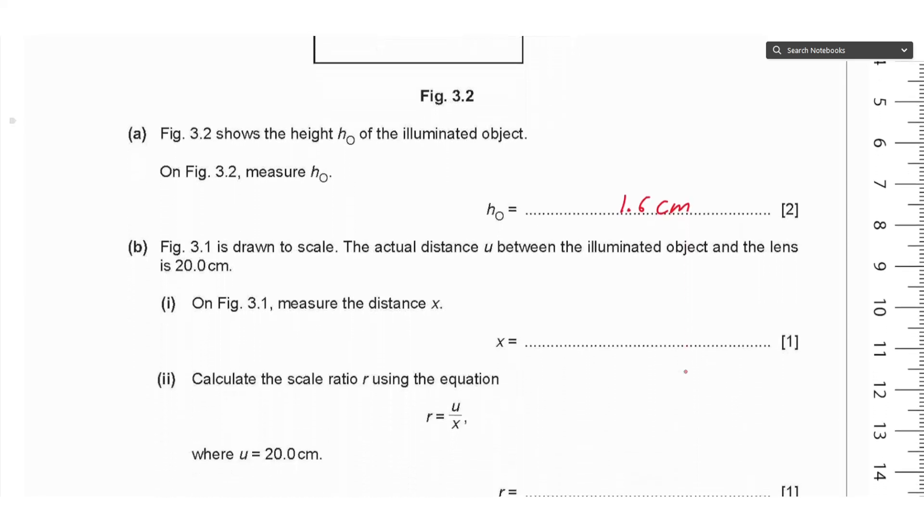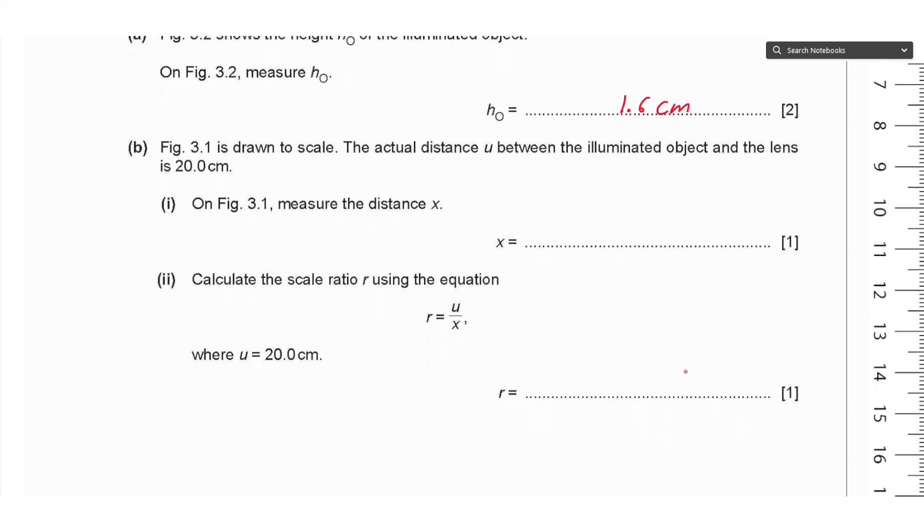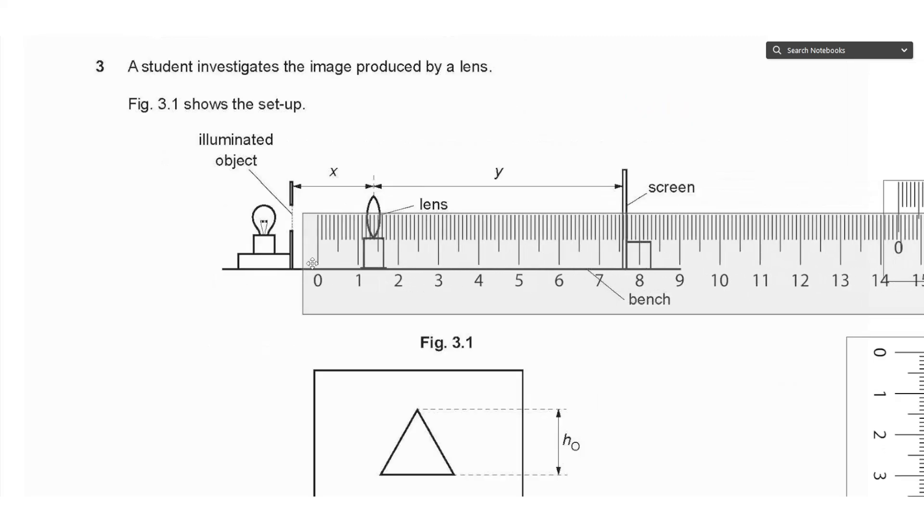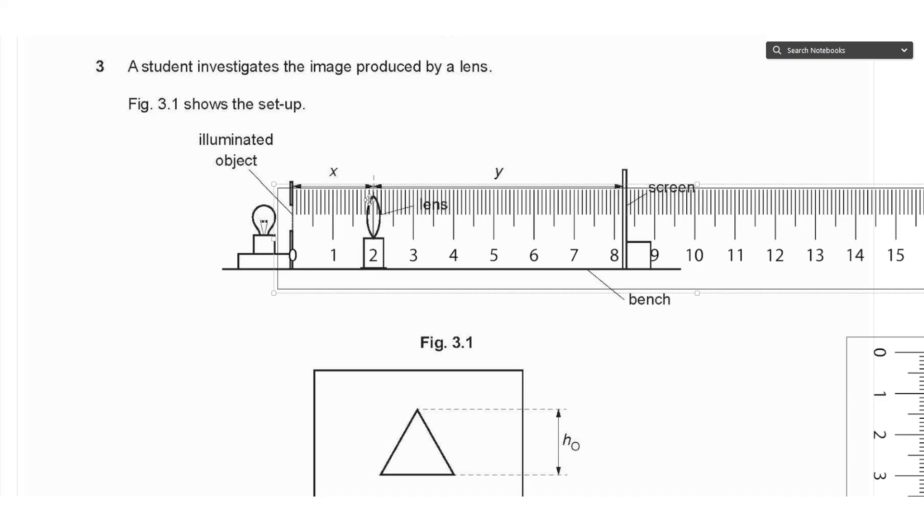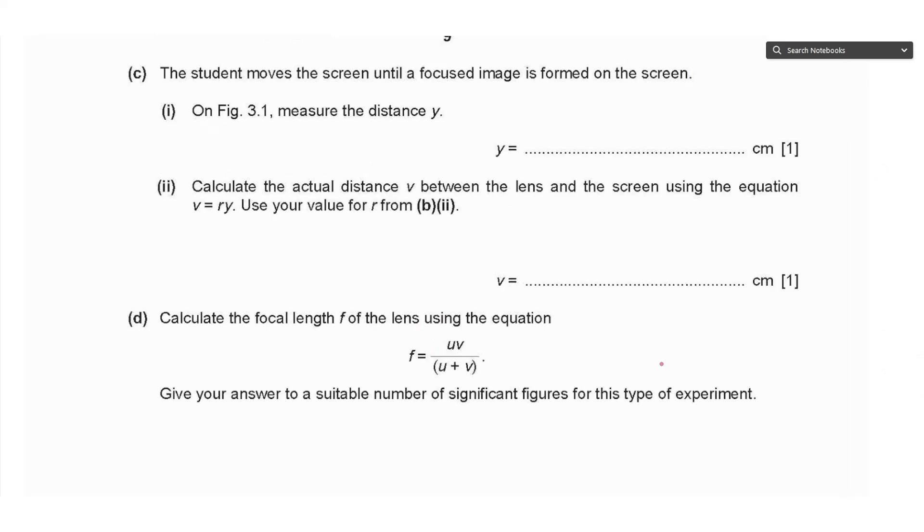Part B says Figure 3.1 is drawn to scale. The actual distance u between the illuminated object and the lens is 20.0 centimeters. On Figure 3.1, measure the distance x. Using the ruler, the distance x is approximately 2 centimeters, we write it as 2.0 centimeters. Calculate the scale ratio r using the equation u over x. So u is 20.0 and x is 2.0, that gives an answer of 10 with no unit.